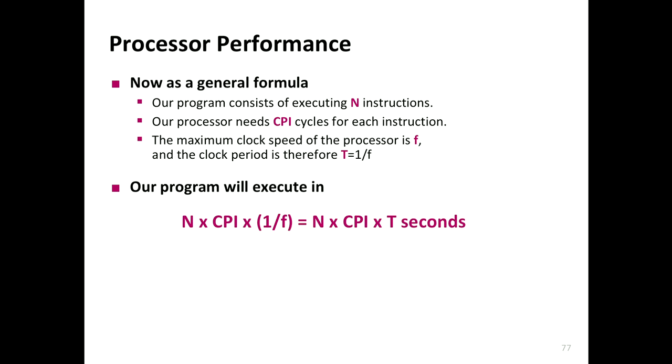The processor performance formula: execution time equals N (number of instructions) × CPI × T (clock period). CPI is one for single-cycle. T depends on the critical path delay. The clock frequency is one over T. This is how you calculate how fast your program executes — substituting the number of instructions, CPI of one, and the critical path time delay.